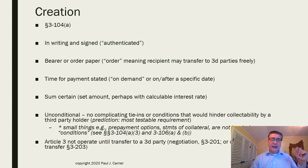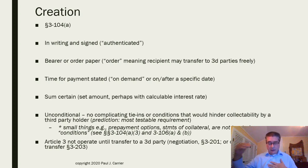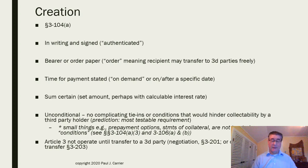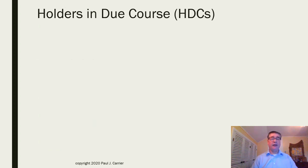Article 3 magic still does not arise until the person who receives that negotiable instrument transfers it to that outside third party — that's called negotiation. Often it's at a discount, and the magic of Article 3 begins.